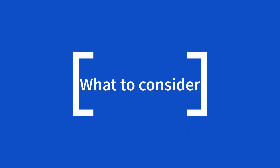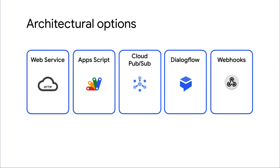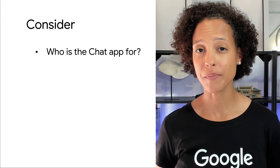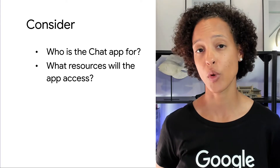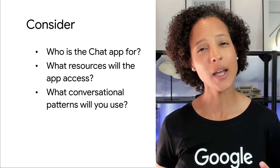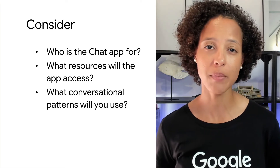So, which of the five architectural options is the best? Well, that depends on a number of things. When choosing a service architecture, ask yourself: Who is the chat app for? What resources will the app be accessing? And what type of conversational patterns do you want to implement?